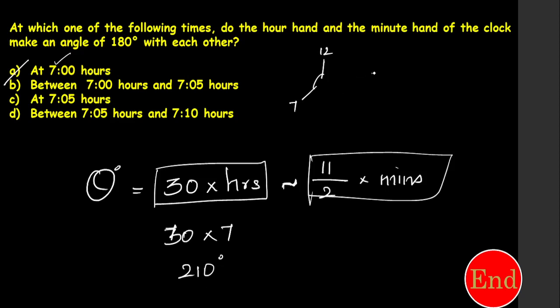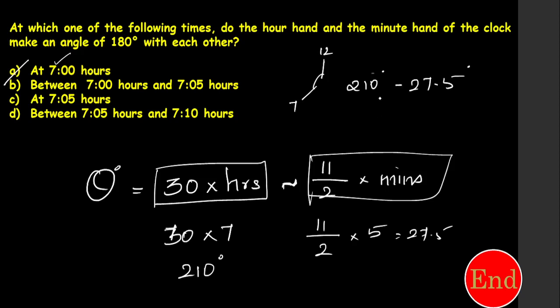For 7:05 — at 7 o'clock it was 210 degrees. The remaining contribution from 5 minutes is 11 divided by 2 times 5, which gives 55 over 2, that is 27.5. So 210 minus 27.5 gives 182.5 degrees.